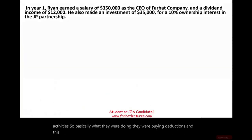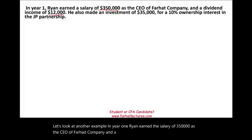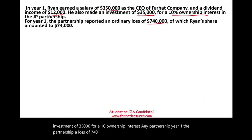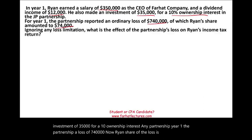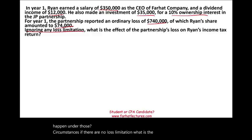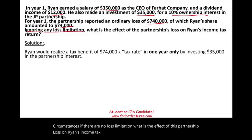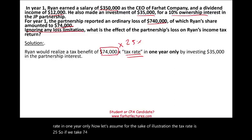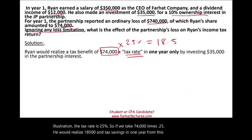From those losses, they would reduce their W-2 income or income from other activities. Basically, they were buying deductions — a form of a tax shelter. Another example: in year one, Ryan earned a salary of $350,000 as CEO of Farhat Company and dividend income of $12,000. He also made an investment of $35,000 for a 10% ownership interest in a partnership. The partnership reported a loss of $740,000, so Ryan's share of the loss is $74,000. Without any loss limitation, Ryan would realize $74,000 times the tax rate. Assuming a 25% tax rate, that's $18,500 in tax savings in one year.